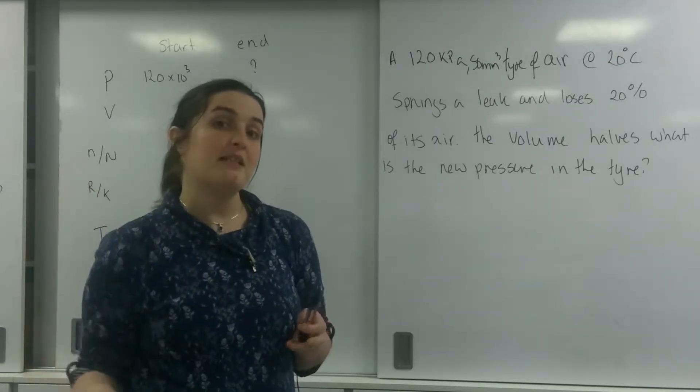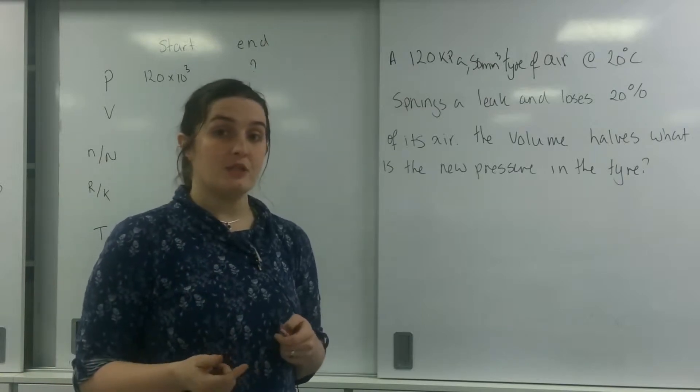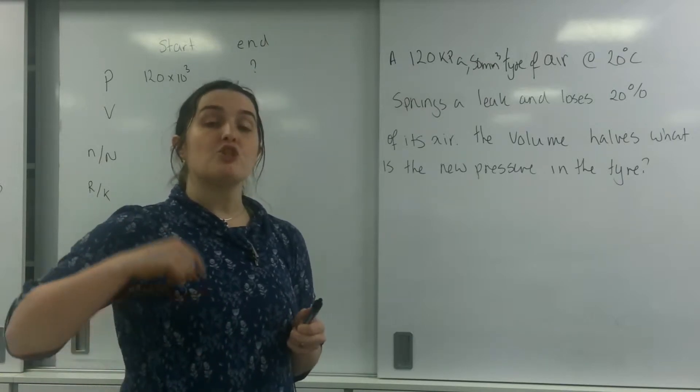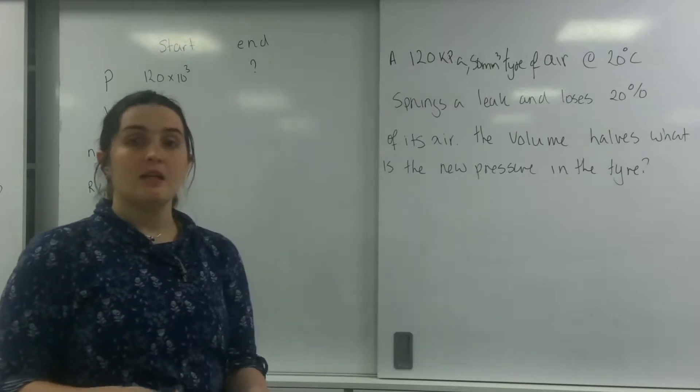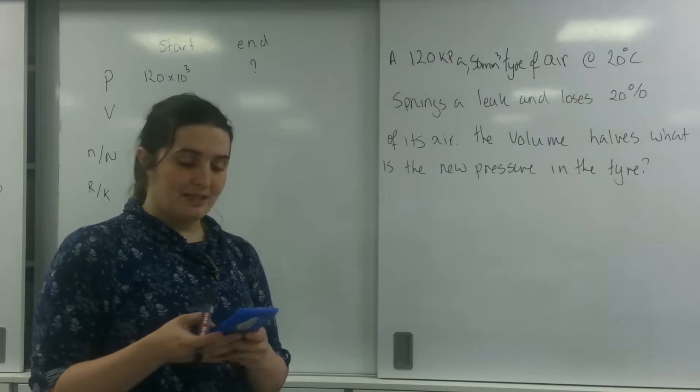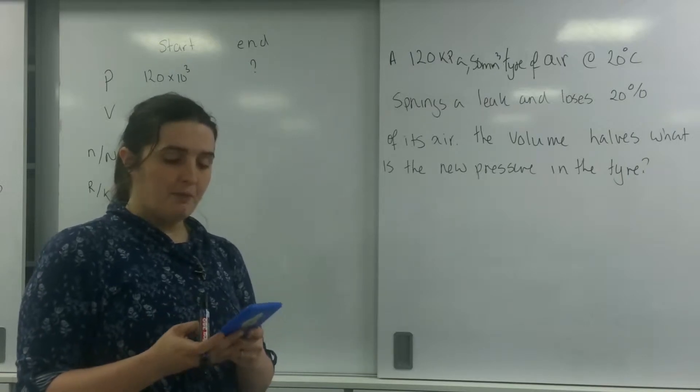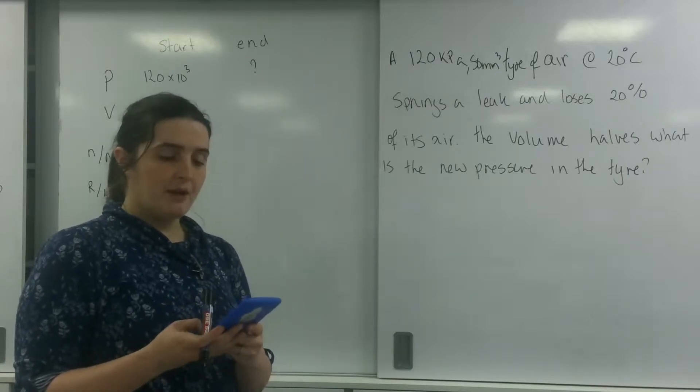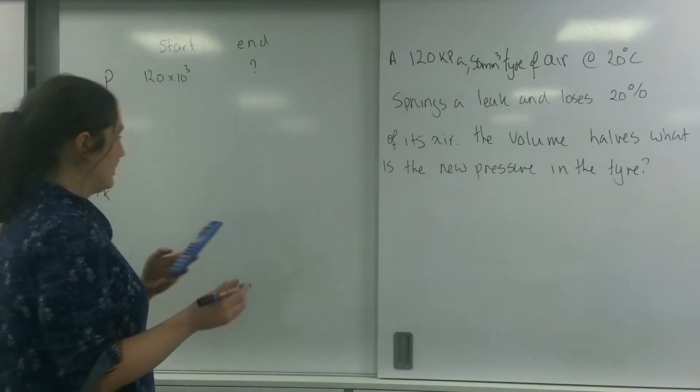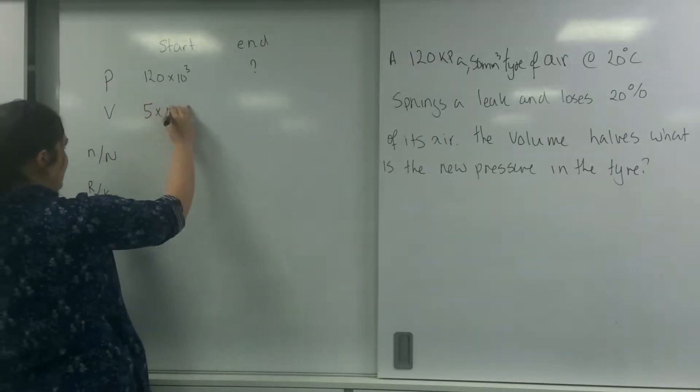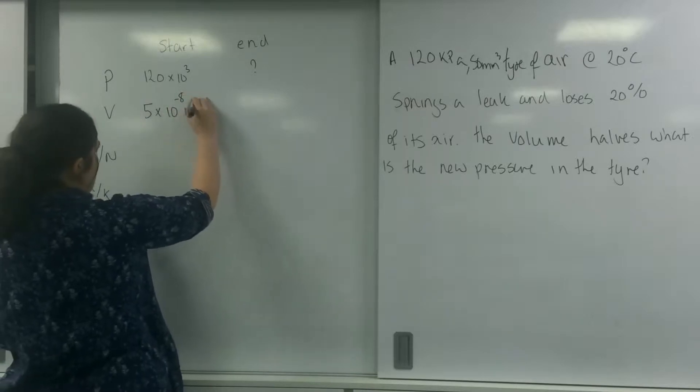Since it's millimeters cubed, to go from millimeters to meters I have to divide by a thousand. Because it's millimeters cubed, I have to do that three times. So I'm going to divide this by a thousand, a thousand again, and a thousand again. So 50 divided by a thousand, divided by another thousand, divided by another thousand, is 5 times 10 to the minus 8 meters cubed.